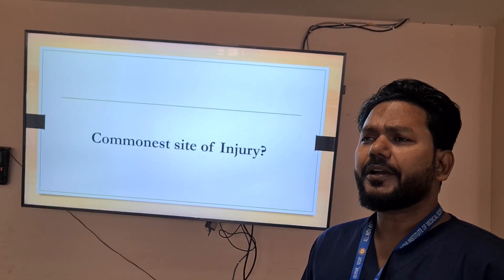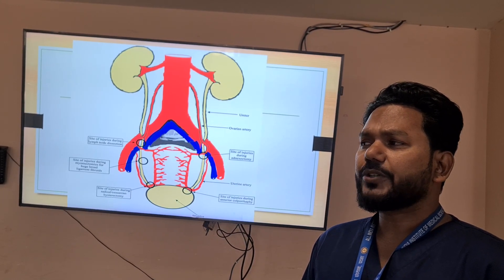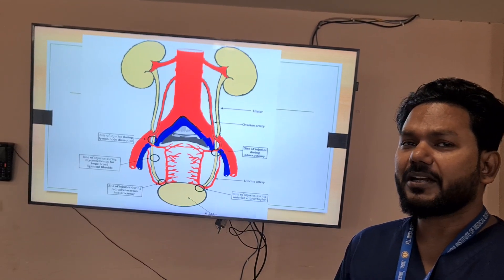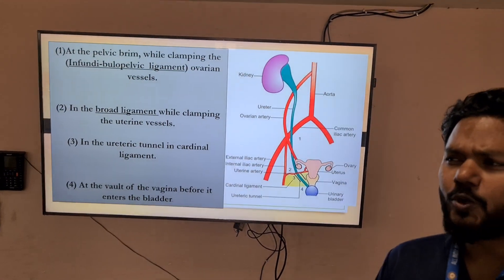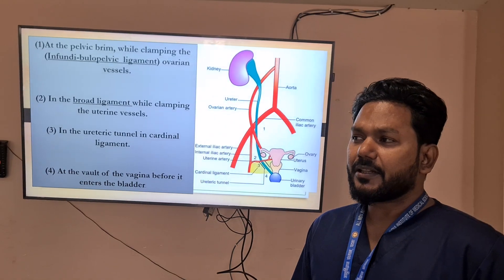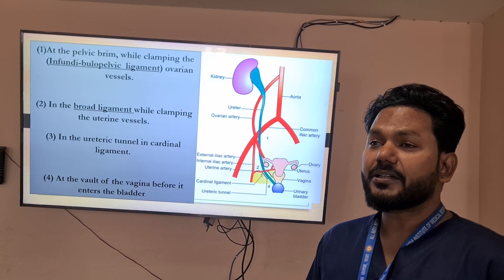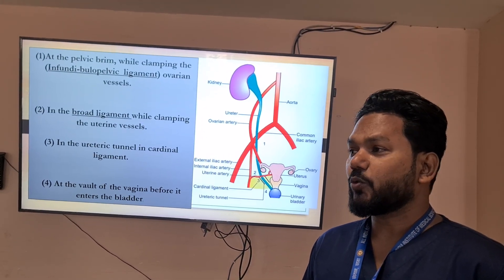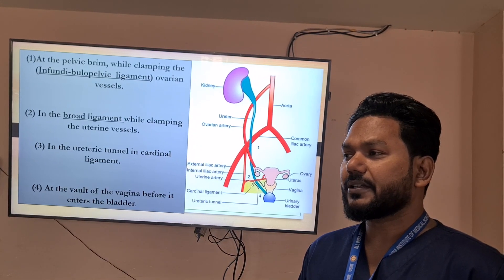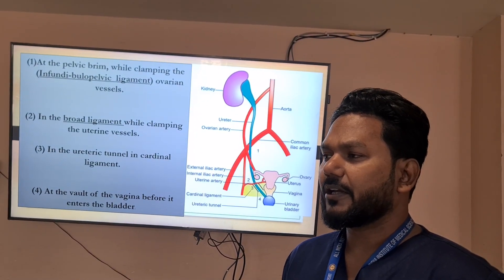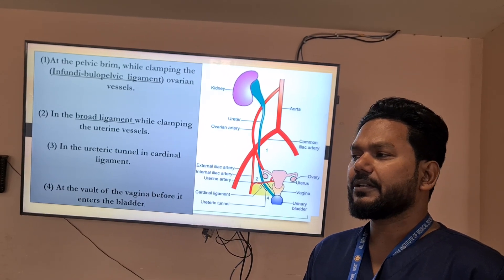The commonest sites of injury: the ureter and ovarian artery run parallel at the level of the pelvic brim, so while clamping the ovarian vessels at the level of the infundibulopelvic ligament, one can damage or clamp the ureter. The second dangerous point is in the broad ligament while clamping the uterine vessels. The third is in the ureteric tunnel in the cardinal ligament, and the fourth is at the vault of the vagina before it enters the bladder.